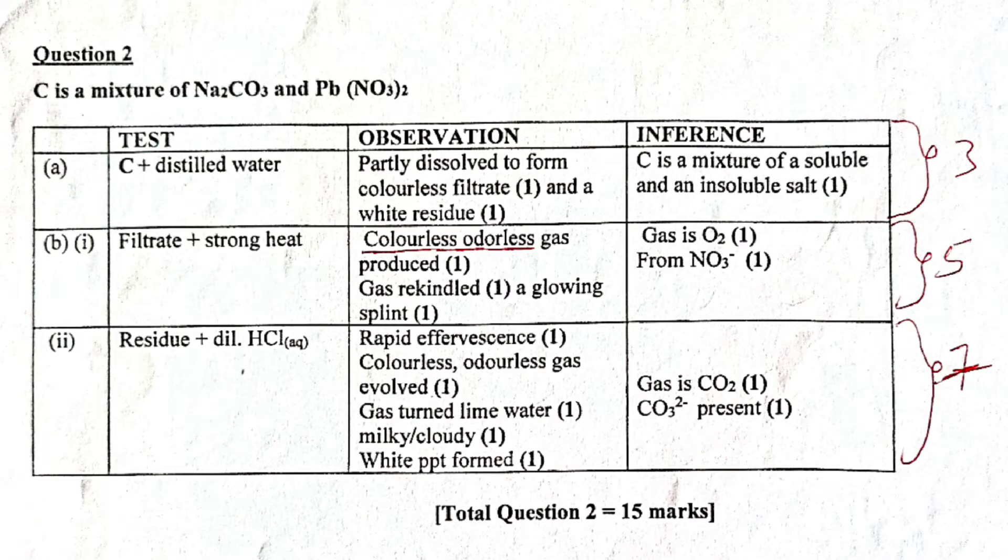Normally, we have to put, so the marking guide told us that C is a mixture of Na2CO3 and Pb(NO3)2, okay. But we have to test for it. So test, under C plus distilled water. That was the instruction. Observation that is expected. Partly dissolve to form colorless filtrate. That is one mark. If you mention that the thing dissolve, or you say it is soluble, you must mention that it has a colorless filtrate to score that mark there. And a white residue. You must mention that white residue to score the mark.